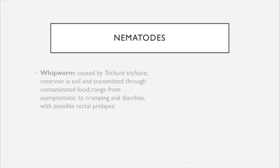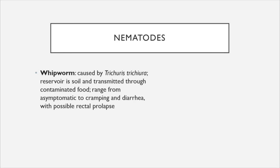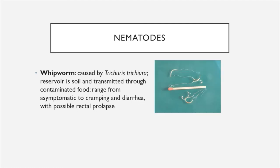Whipworm is caused by Trichuris trichiura. Its reservoir is soil and it is transmitted through contaminated food. Symptoms range from asymptomatic to cramping and diarrhea. One rare but serious complication is rectal prolapse, defined as a condition where the rectum becomes detached from the internal structure of the body and protrudes out of the anus.